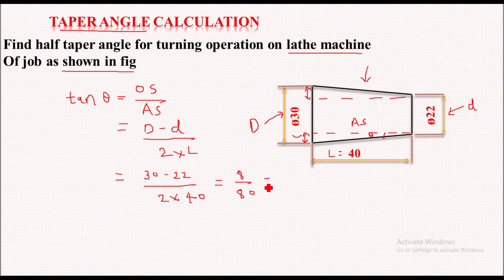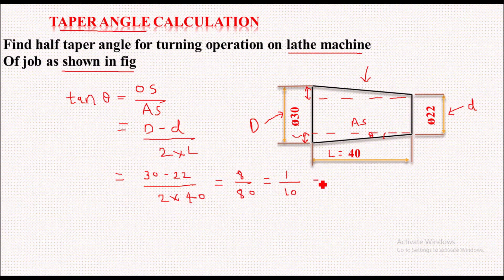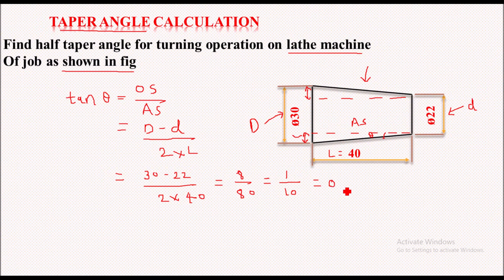So 8 upon 80, which will further on simplifying will get 1 by 10, and which can be written as 0.1. So we get tan theta equal to 0.1.